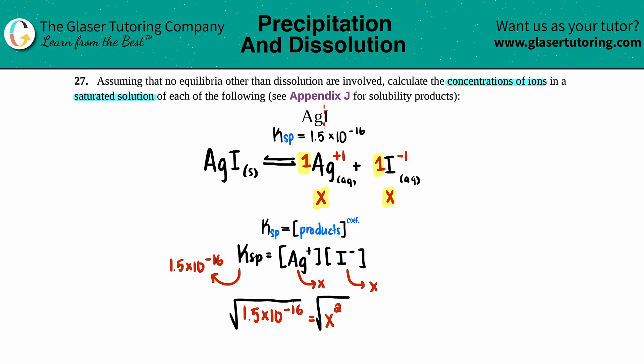Solve for x by taking the square root. Square root of 1.5 × 10⁻¹⁶ gives me 1.2 × 10⁻⁸, so x equals 1.2 × 10⁻⁸ M (molarity).